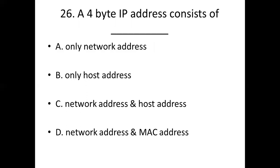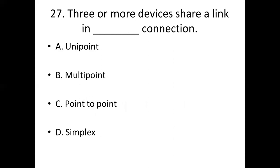Twenty-sixth bit: If a 4-byte IP address consists of dash — Option A: Only network address. Option B: Only host addresses. Option C: Network addresses and host addresses. Option D: Network addresses and MSA addresses. Answer: Option B — Multipoint. Option C: Point to Point. Option D: Simplex. Answer: Option B — Multipoint.